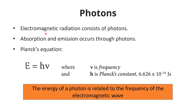The electrons are absorbing and emitting electromagnetic radiation, but that electromagnetic radiation consists of photons. So absorption and emission actually occur through photons. The electron absorbs photons and goes from ground state to excited state, and when it returns to the ground state it emits photons. Photons are absorbed and emitted by electrons.